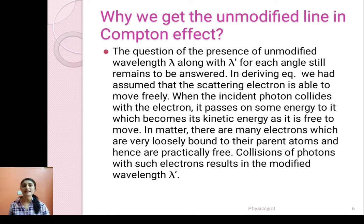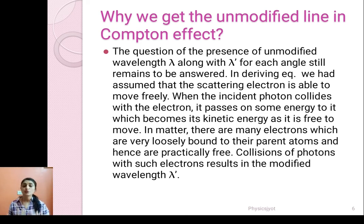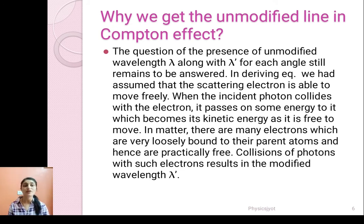We get one line having a wavelength the same as that of the incident radiation, and another line having a wavelength slightly greater than the wavelength of the incident radiation. The line whose wavelength is the same is called the unmodified line, and the line whose wavelength is slightly greater is called the modified line in Compton effect. Now we want to know why we get the unmodified line in Compton effect.